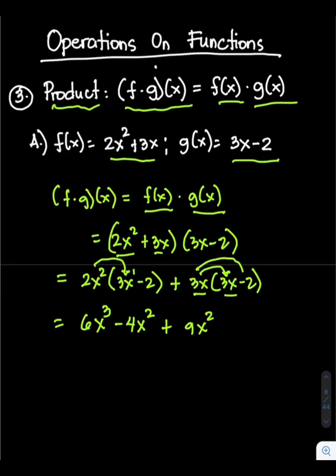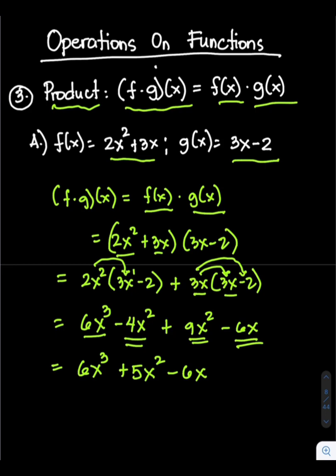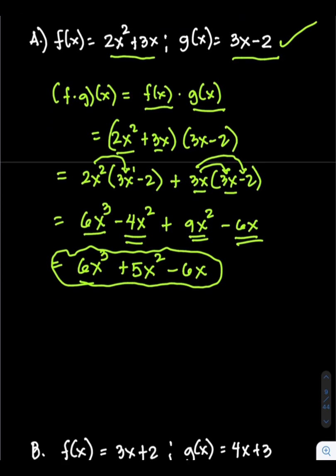Then 3x times negative 2 gives negative 6x. Now combine like terms: 6x cubed has no like term, so just copy it. Negative 4x squared plus 9x squared gives positive 5x squared. The last term is negative 6x. So our final answer is 6x cubed plus 5x squared minus 6x — that is the product of the given functions.